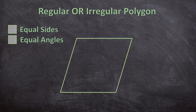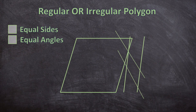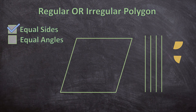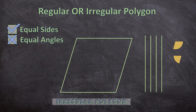Now let's look at the next shape. First we're going to look at its sides — are they equal? Yes, all of its sides are equal, so we can tick the first box. But when we look at the angles, not all four of them are the same size, so we cannot tick the second box. It only has equal sides but not equal angles, so this is an irregular polygon.